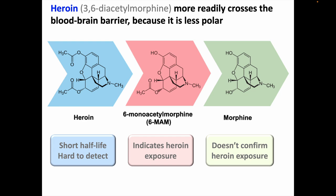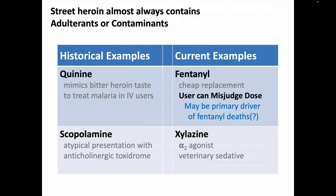It's also important to recognize that street heroin almost always contains adulterants or contaminants. The only thing I'm going to emphasize is that some of what's being sold currently as heroin contains, or is actually completely substituted by, fentanyl. Since fentanyl is more potent and the amounts aren't tightly controlled anyway, this puts the heroin user at risk for misjudging the dose, which can result in fatal outcomes.